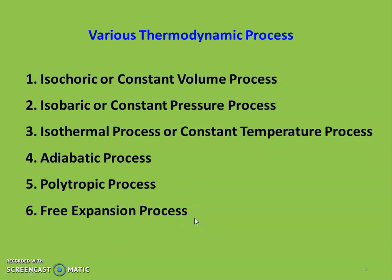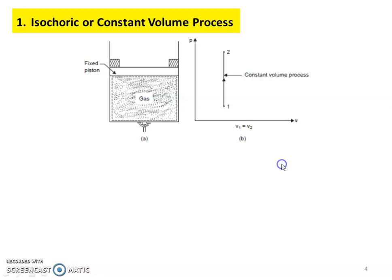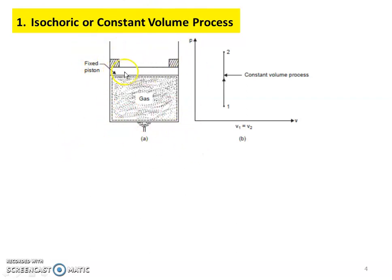First, the Isochoric or Constant Volume Process. In the system diagram, there is a piston-cylinder arrangement with a fixed piston.